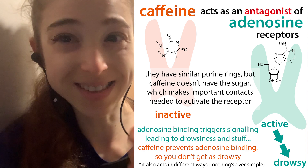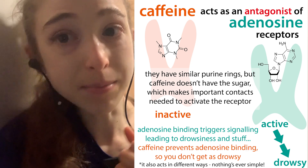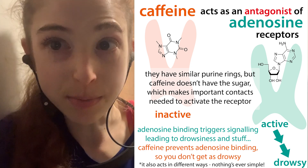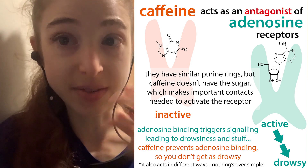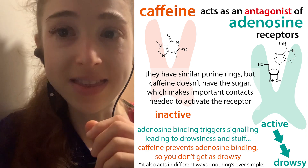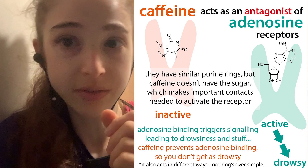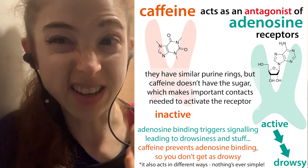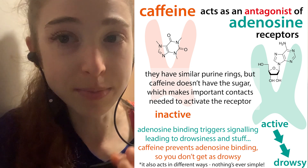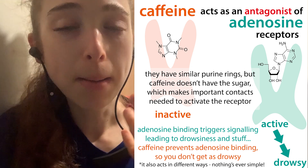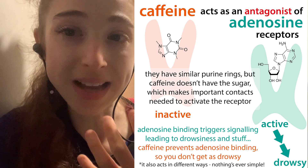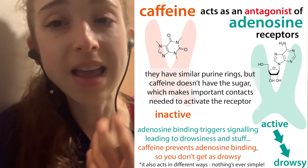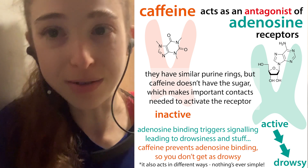My favorite antagonist is caffeine. Caffeine binds to adenosine receptors. Adenosine is basically part of ATP, and it has specific receptors in your brain cells. When adenosine binds to these receptors, it causes — at the end result — you to get drowsy. Caffeine binds to those receptors and kind of mimics adenosine, but it doesn't activate them. So it's acting as an antagonist, preventing those receptors from being activated and therefore preventing them from making you drowsy.